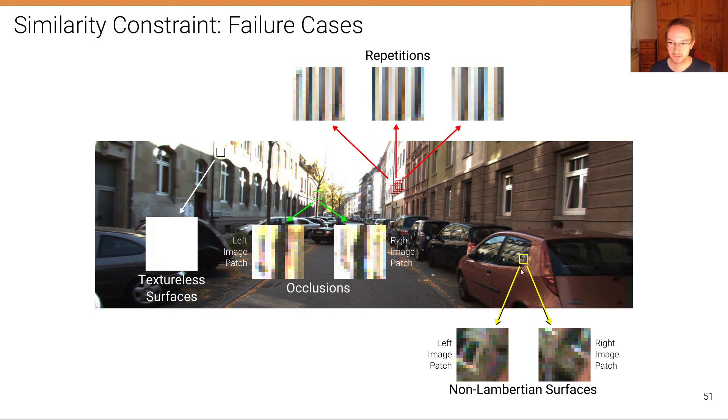And then finally here, we have violations of the Lambertian surface model, where we have strong specular reflections from the building on the opposite side in the window of this car. And you can see that if I'm toggling now between, this is the patch of the left image, and this is the corresponding patch in the right image, that's corresponding based on the actual surface location, you can see that the content of these patches completely changes, gives us actually the wrong solution at that location.